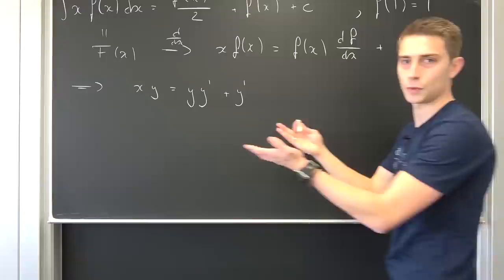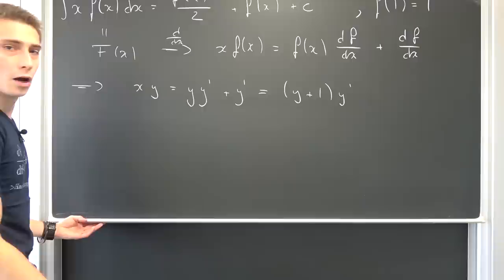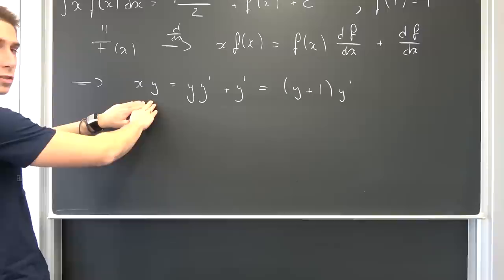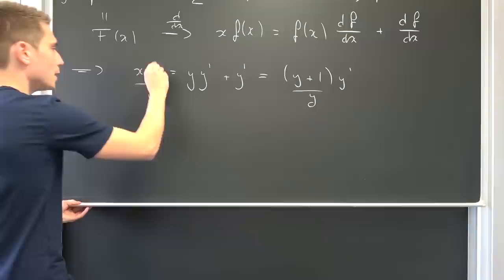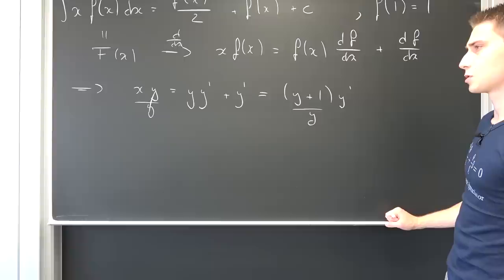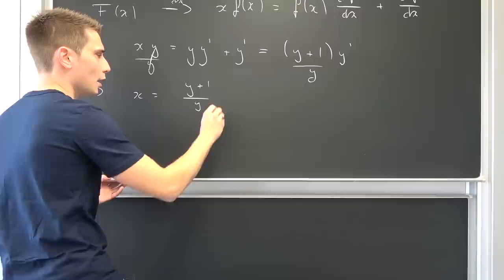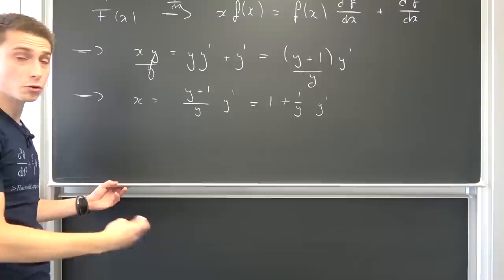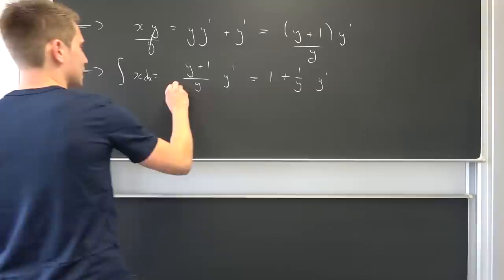Now let us factor out the y prime. We are going to end up with y plus one, times y prime. We are basically done setting up this differential equation because we can use separation of variables — making one side a function of x only and the other a function of y. If we divide both sides by y under the condition that f equals y is not equal to zero, we end up with a simple non-linear differential equation: x equals y plus one over y times y prime, which breaks up to one plus one over y, times y prime.